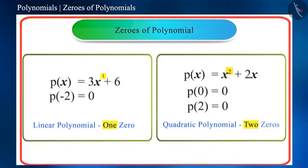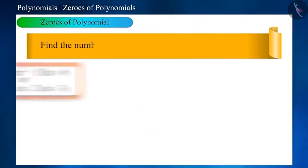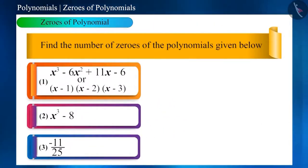As we know, the number of zeros of polynomials is determined by the highest power of the variable. Let's take a question related to this. Find the number of zeros of the given polynomials. You can think about your answer by pausing the video.